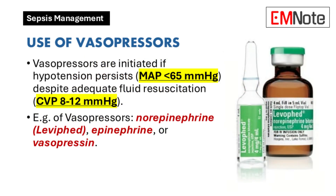If hypotension persists despite adequate fluid resuscitation, defined as a central venous pressure between 8 and 12 mmHg with a mean arterial pressure below 65 mmHg, vasopressors such as norepinephrine, epinephrine, or vasopressin should be started.